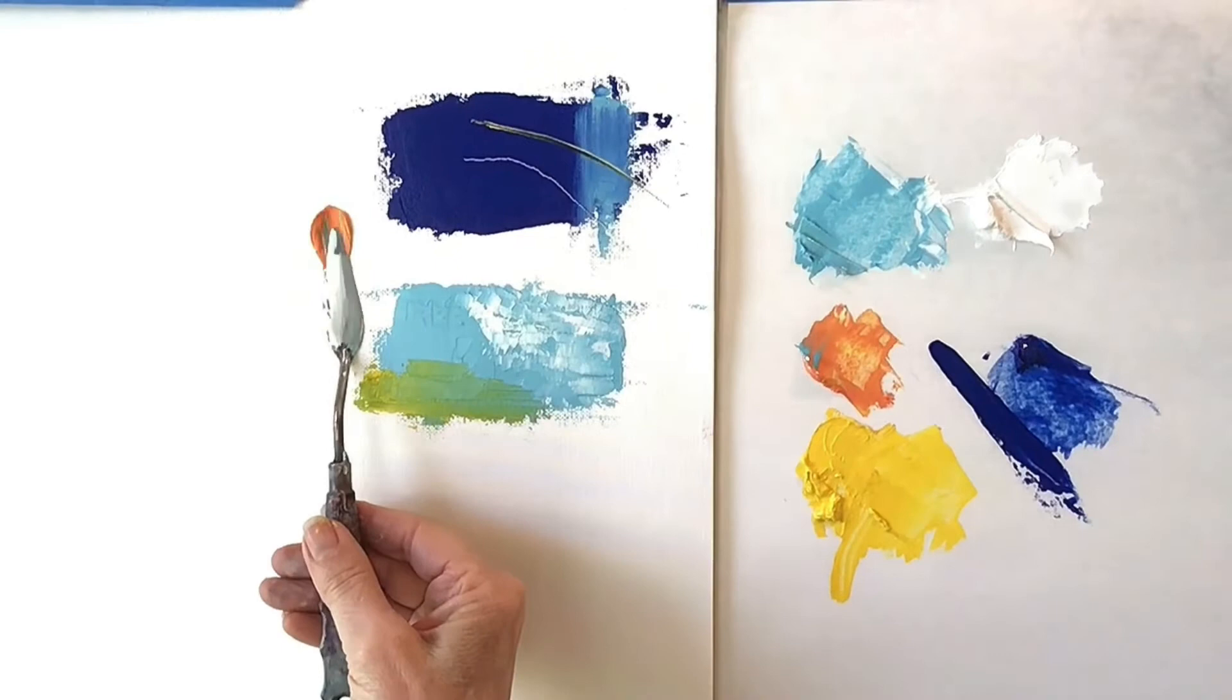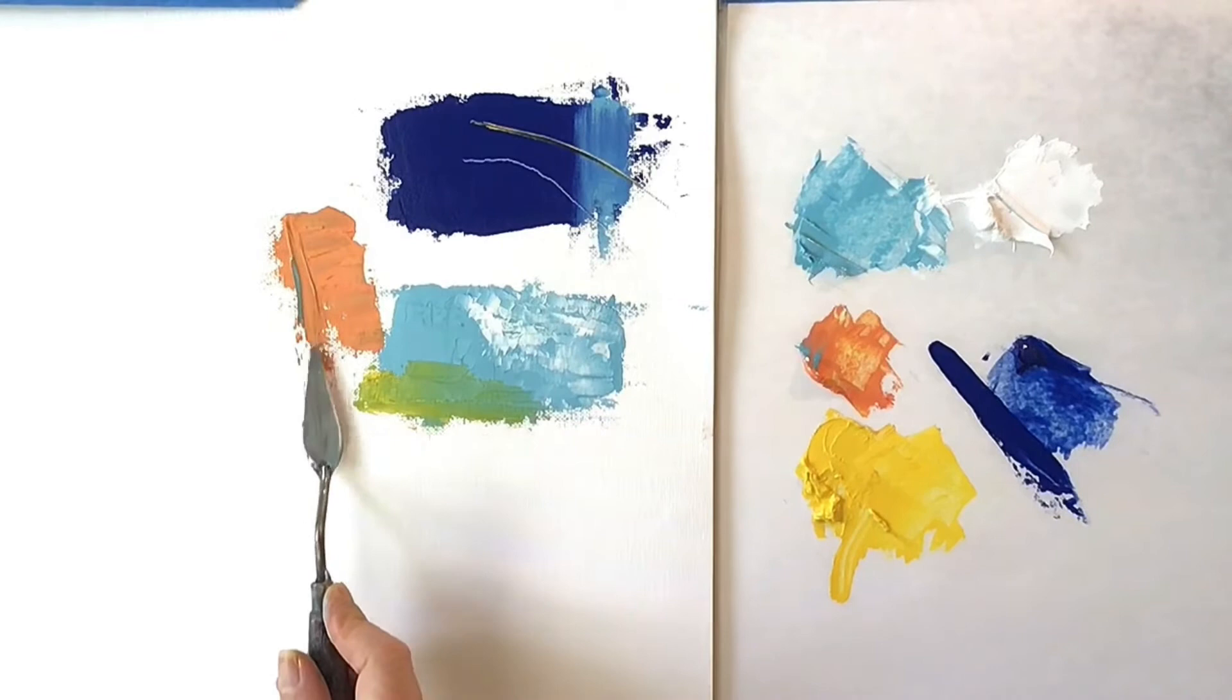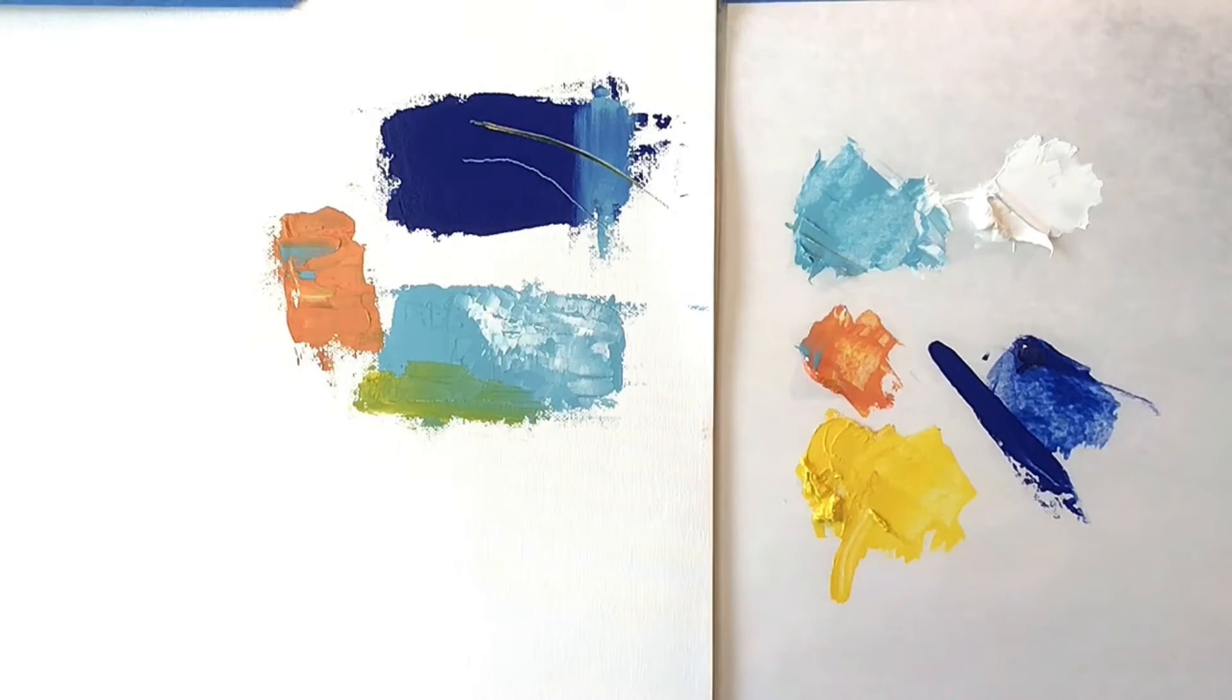When I pick up the orange paint, I noticed I had not cleaned my palette knife off completely. So I did pick up a little blue paint, but I decided to blend it back through to see what would happen.